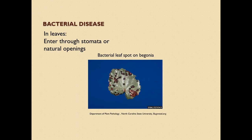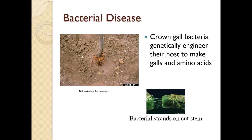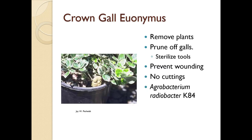Bacteria need some sort of entry into the plant - usually a wound, but it can be through stomata or other natural openings. Here's a bacterial leaf spot on begonia. Crown gall bacteria genetically engineer their host to make galls and amino acids. If you cut the stem and pull it apart, you'll see the strands of bacterial disease. Crown gall on euonymus is very common. You remove affected plants, may prune off the galls, sterilize tools between cuts, prevent wounding, don't take cuttings, and Agrobacterium radiobacter K84 is actually a biological control for crown gall.